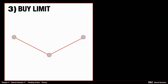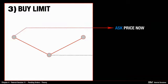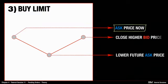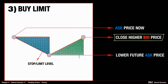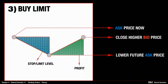The next pending order type is buy limit. All buy orders are opened at the ask price and closed at the bid price. Buy limit orders should be opened at the lower future ask price. To make a profit on this type of order, the closing bid price needs to be higher than the opening ask price.